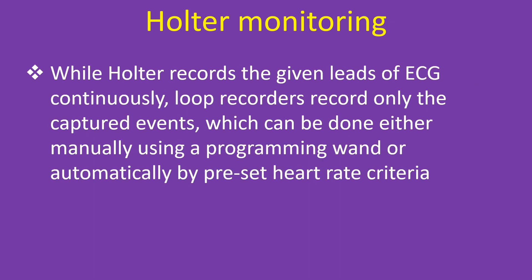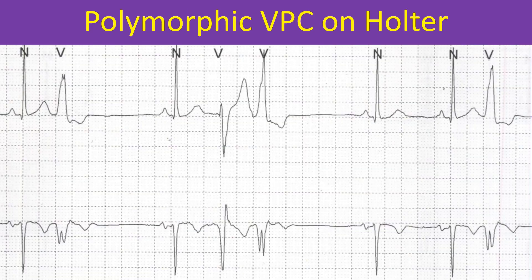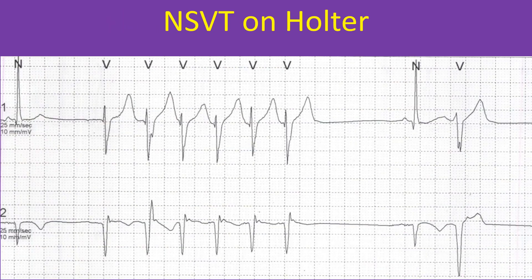While Holter records the given leads of ECG continuously, loop recorders record only the captured events, which can be done either manually using a programming wand or automatically by preset heart rate criteria. This case shows tachycardia with polymorphic ventricular ectopic beats documented by Holter monitoring, with a run of non-sustained ventricular tachycardia noted in the Holter recording.